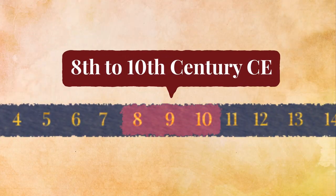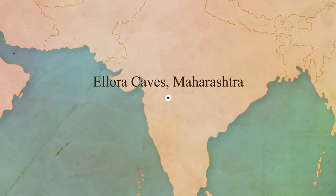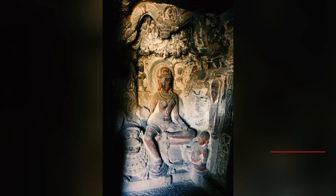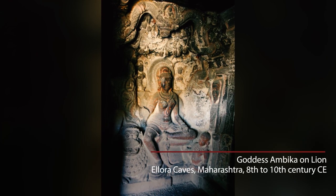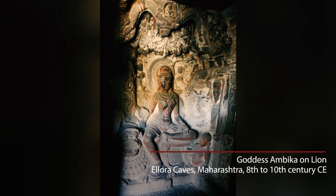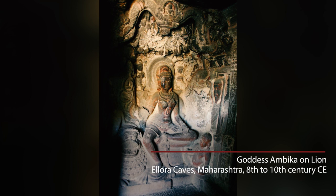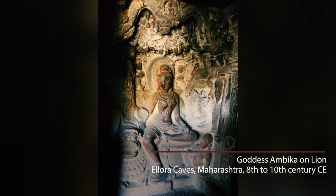In the Jain tradition, we find the goddess Ambika riding a lion, but she is also associated with children. Which is why even today, when we talk of Durga, we talk of her as a goddess as well as a mother.